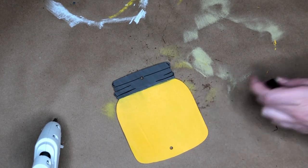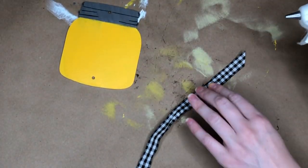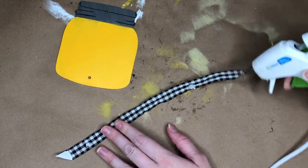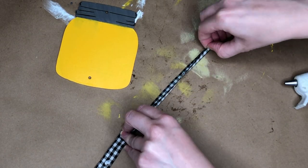To add a little bit of definition to the lid of our honey pot I just took a black marker and added in some lines to make it a little bit more dimensional.